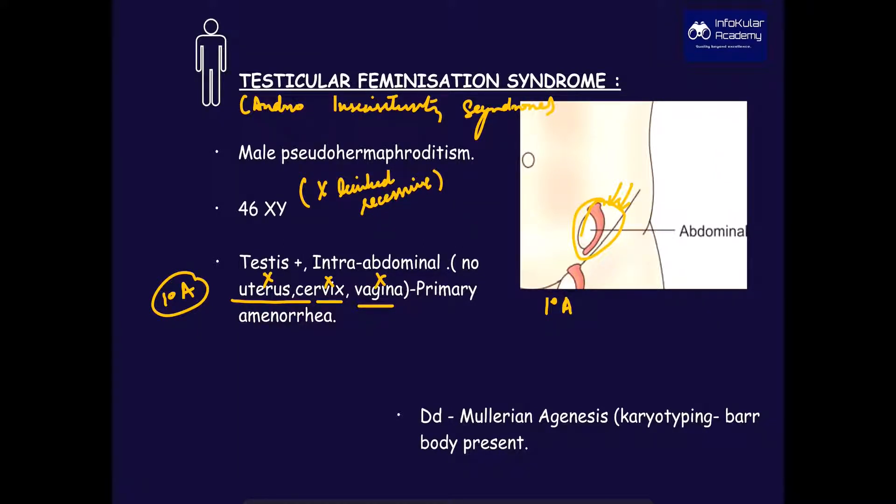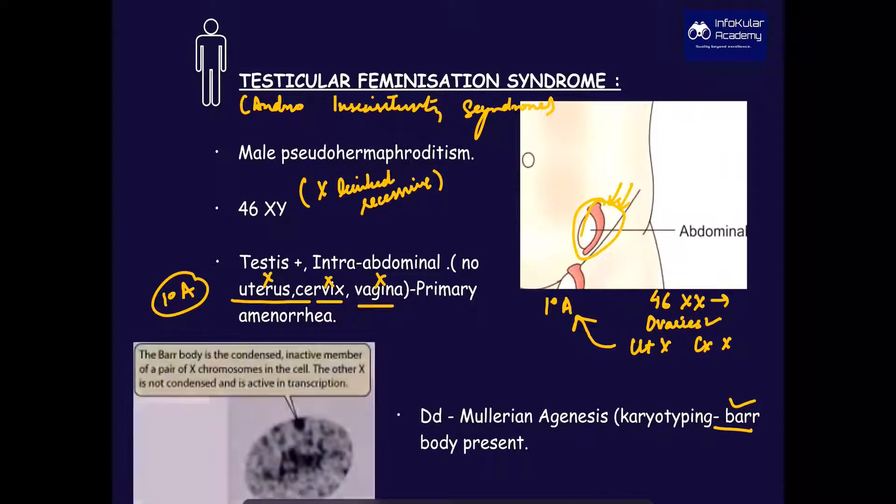A similar clinical feature, primary amenorrhea, is seen in Mullerian agenesis. This is, however, a person with 46,XX, that is female, who has ovaries but no uterus and cervix, and hence primary amenorrhea. In a question that requires differentiation, the genotypic differentiation is the main clue. Considering this has two X chromosomes, it will show presence of Barr body, which is a condensed and inactive member of a paired chromosome. Mullerian agenesis is also called MRKH syndrome, that is Mayer-Rokitansky-Küster-Hauser syndrome.